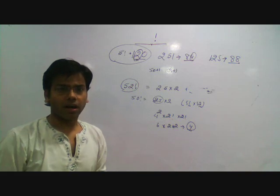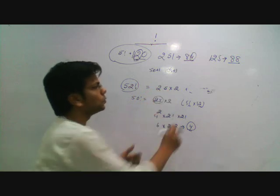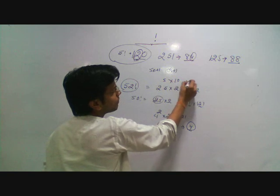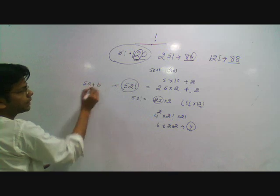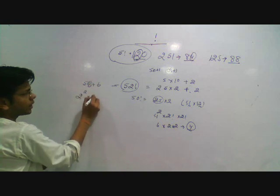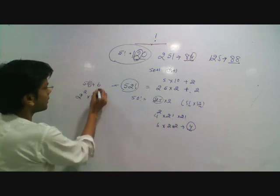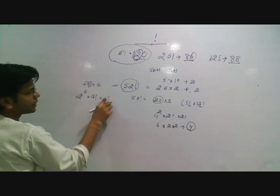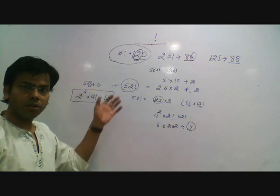In some books or online materials, you see 52 written as 25 into 2 plus 2, or 5 into 10 plus 2 — meaning written as 5A plus B. The formula is: 2 raised to power A, into A factorial, into B factorial. The concept is the same: we work in bundles of 5, and the extra B terms contribute B factorial.